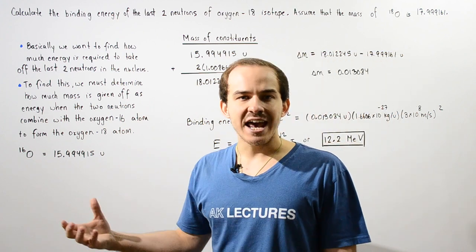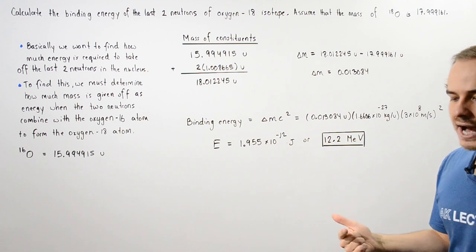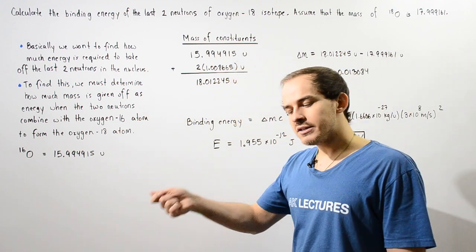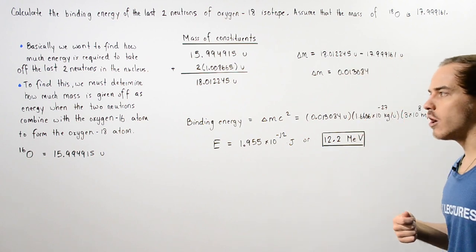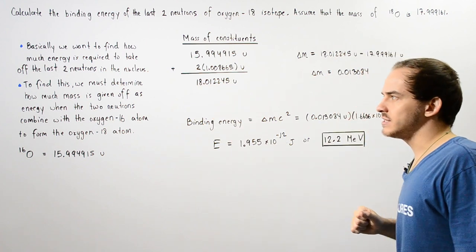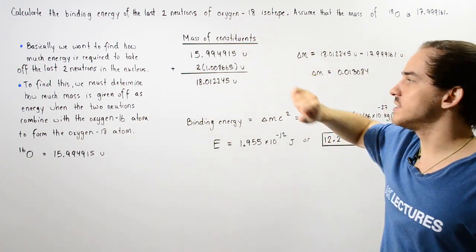That will give us how much energy is released when our two neutrons are combined, and that corresponds to the energy required to take those two neutrons off again. Basically, we want to find how much energy is required to take off the last two neutrons from the nucleus of this isotope.